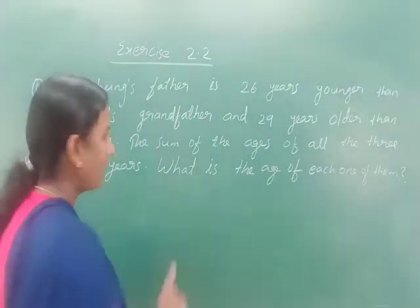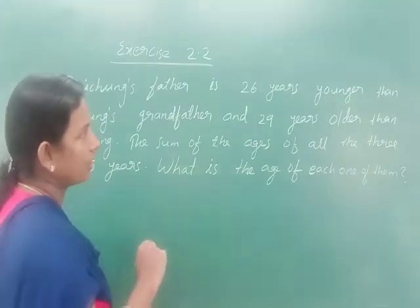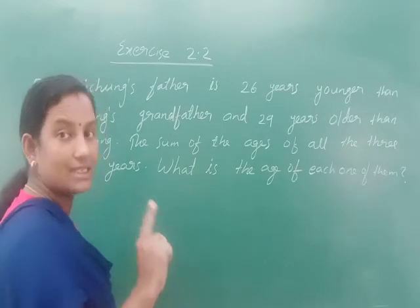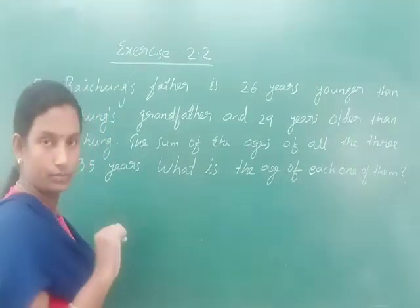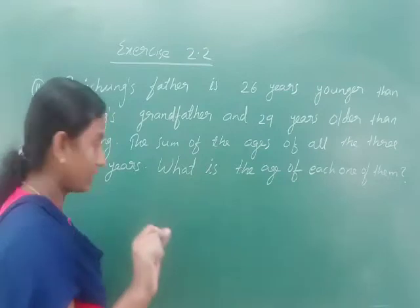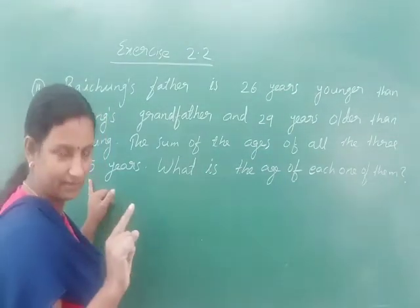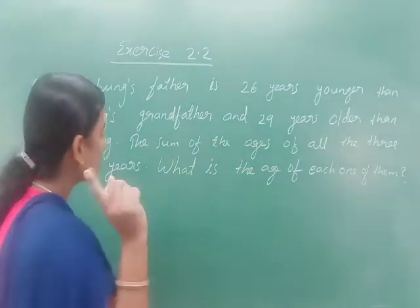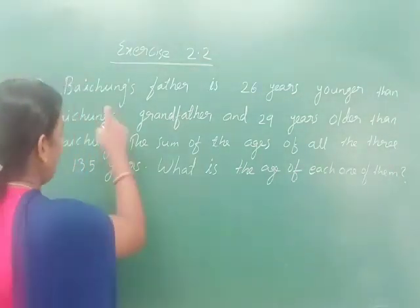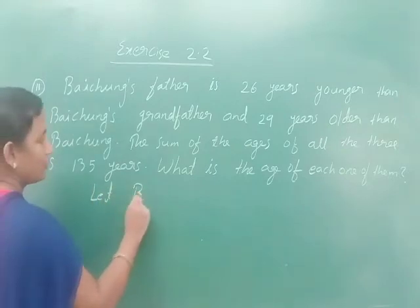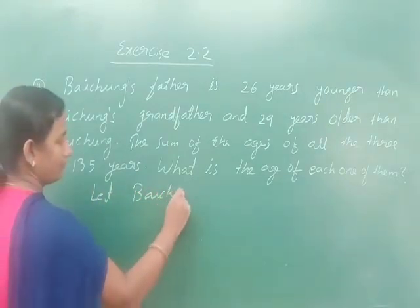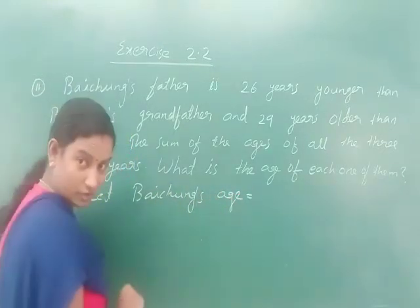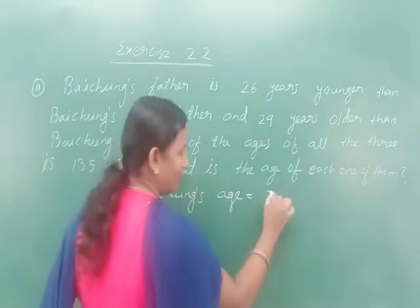Next, question number 11. Baiju's father is 26 years younger than Baiju's grandfather and 29 years older than Baiju. The sum of the ages of all three is 135. What is the age of each? Let Baiju's age be x.